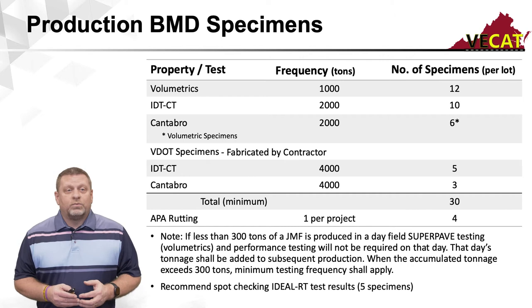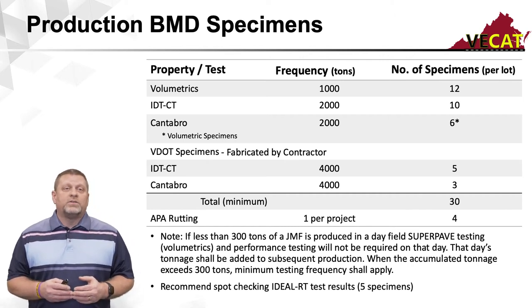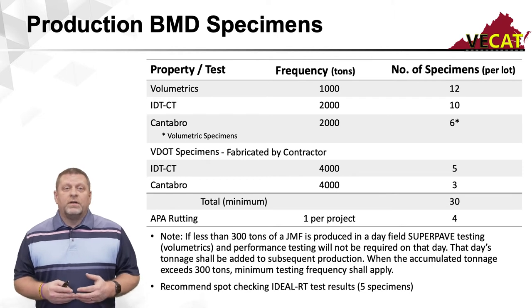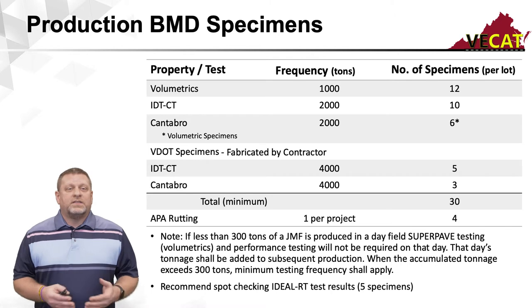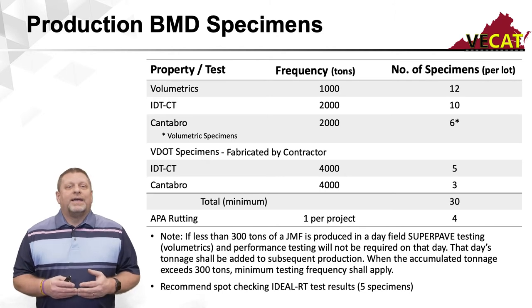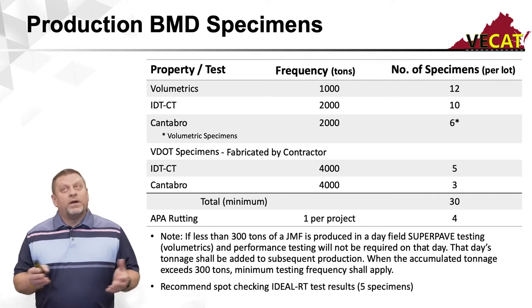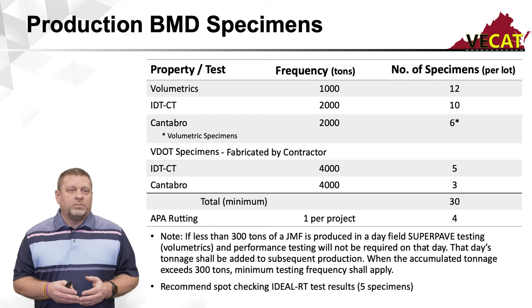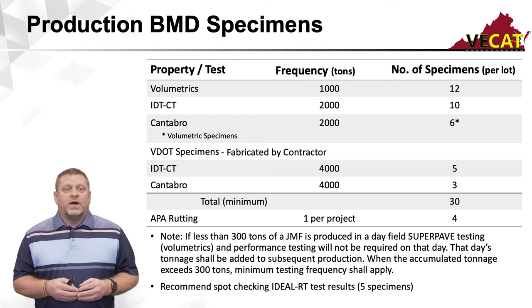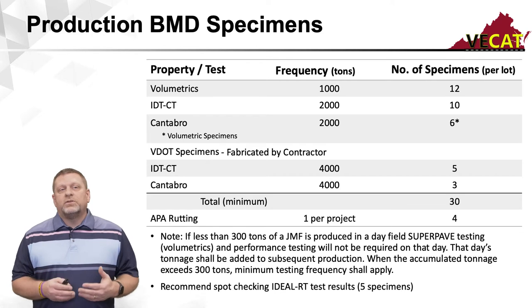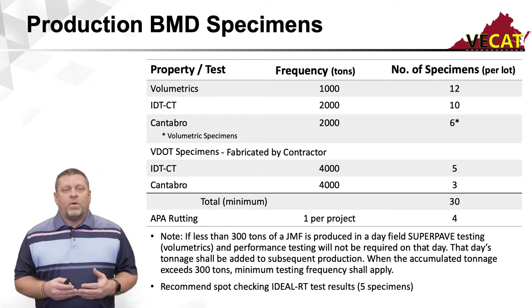When you count this out, you have a minimum of 30 specimens required per lot of production testing. In addition, but not every lot — only once per project — you have to make specimens for the rut test, basically once per contract per year. Once per contract per project, you need to make four specimens to get the rut test done. The numbers in this table are the minimums required per lot, and it's possible you could have to do quite a bit more.